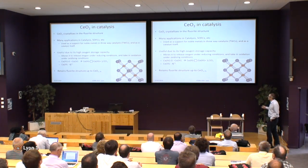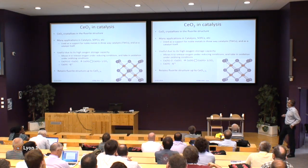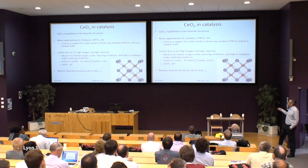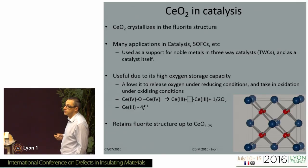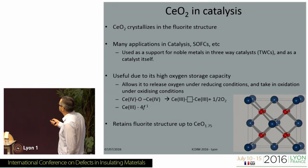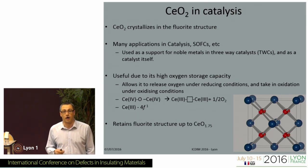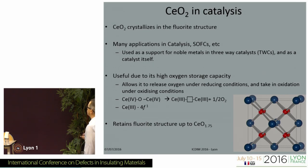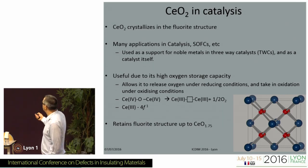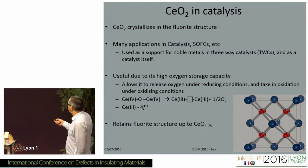Just to give a quick background to cerium dioxide: its fluorite structure is used in many applications including catalysis and solid oxide fuel cells. One of the key elements is its high oxygen storage capacity. You can lose oxygen from the lattice, and the compensating charges are localized on cerium atoms to form two Ce³⁺ atoms, which releases oxygen — and that's a dynamical process. So you have a 4F¹ electron.